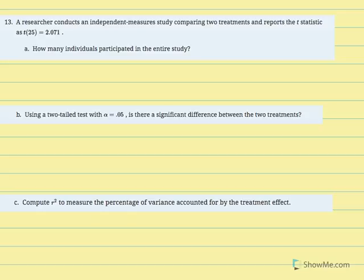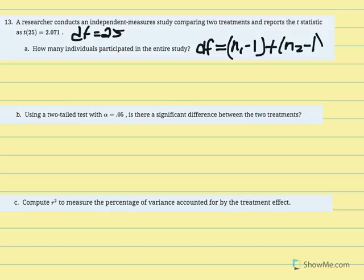Number 13: a researcher conducts an independent measures study comparing two treatments and reports the t-statistic as t(25) equals 2.071. The value in parentheses indicates degrees of freedom equals 25. Part A asks: how many individuals participated in the entire study? For an independent measures t-test, degrees of freedom equals n1 minus 1 plus n2 minus 1.